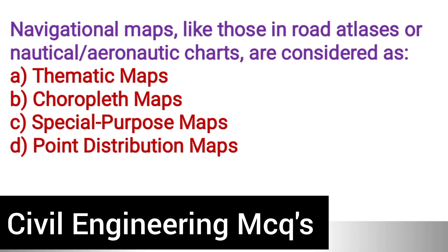Next question: Navigational maps like those in road atlases or nautical/aeronautic charts are considered as? Option A: Thematic maps. Option B: Choropleth maps. Option C: Special purpose maps. Option D: Point distribution maps. The correct answer is option C, special purpose maps.